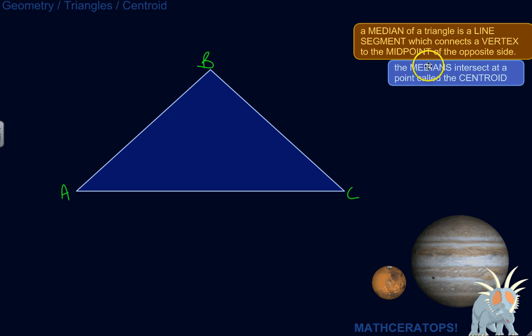The centroid is the point where the three medians of the triangle intersect. So what is a median of a triangle?